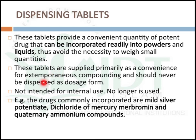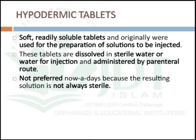Dispensing tablets are not intended for internal use and are no longer used due to toxicity. Examples include mild silver proteinate, mercuric dichloride, and quaternary ammonium compounds, mainly used to prepare solutions. Hypodermic tablets are soft, readily soluble tablets originally used for the preparation of solutions to be injected. These tablets are dissolved in sterile water for injection and administered by parenteral routes. However, this preparation is not preferred nowadays because the resulting solution is not always sterile.